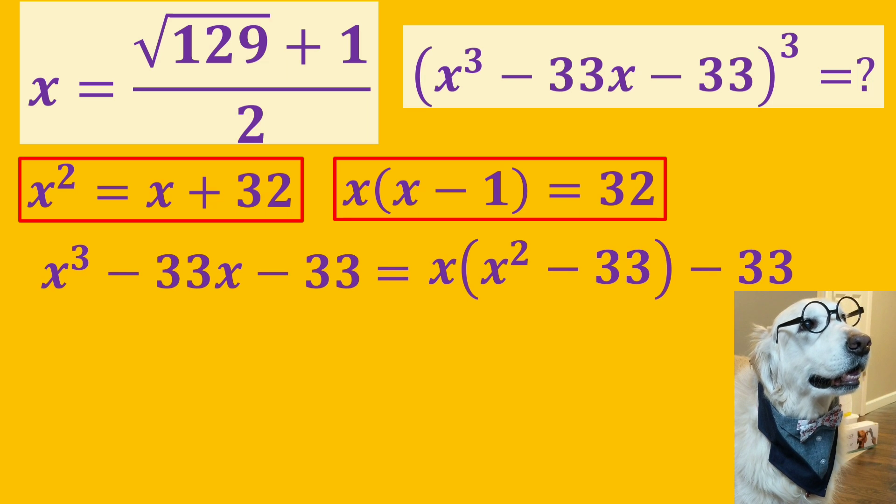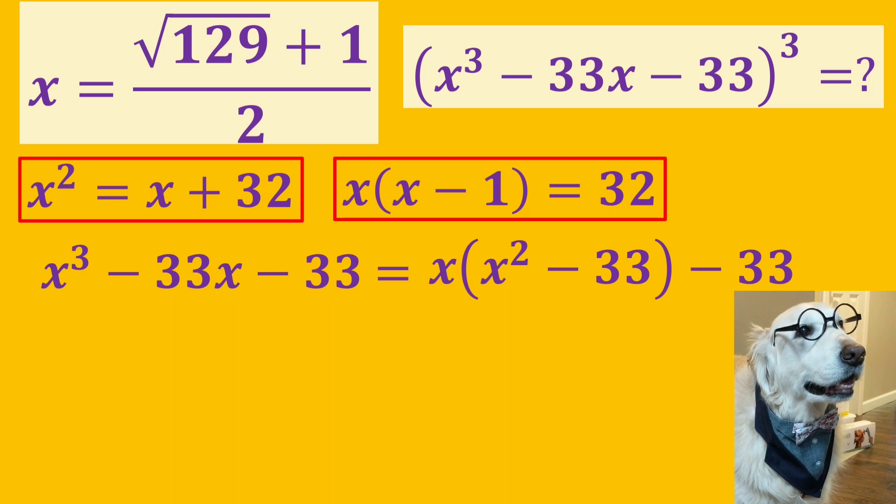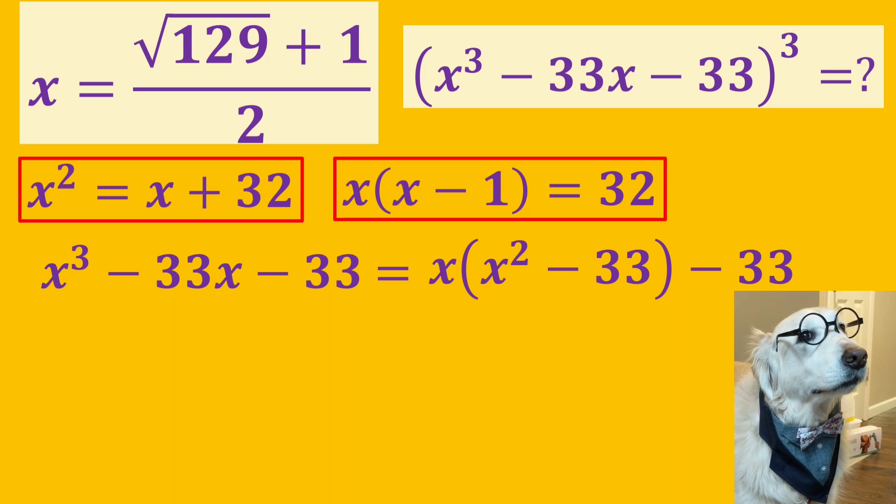Now, we are dealing with x cubed minus 33x minus 33. x cubed minus 33x is equal to x times x squared minus 33. So, we can rewrite it like this.